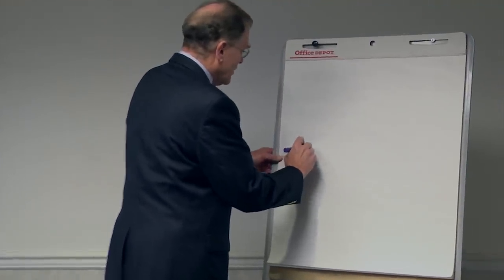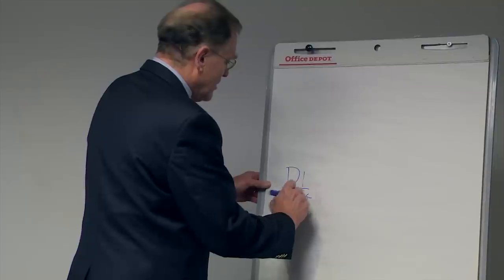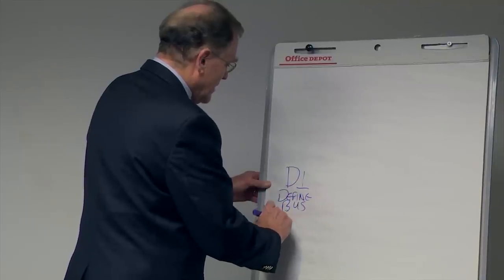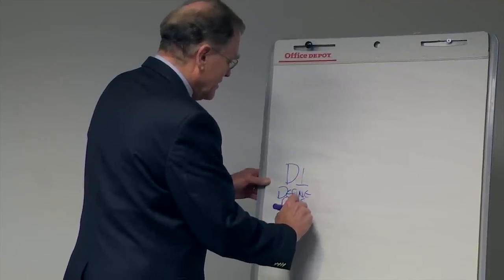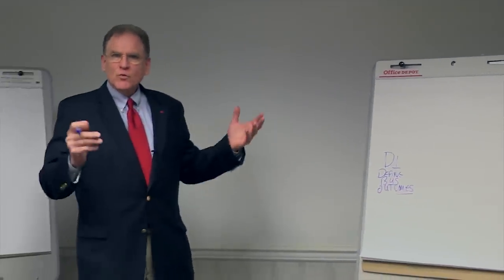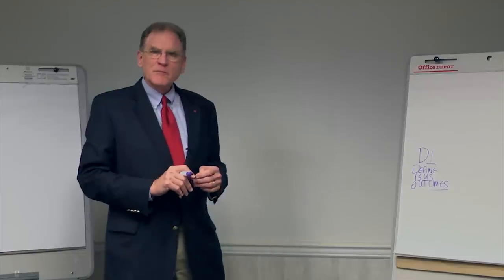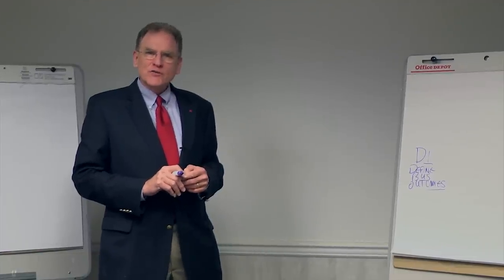I'm just going to draw them up here on the board. We're going to start over here with D1, which is define business outcomes. And when I say that, people say, well, of course, define business outcomes. Why wouldn't you do that before you start something? That's the first step, but it's the one that frequently gets missed the most.